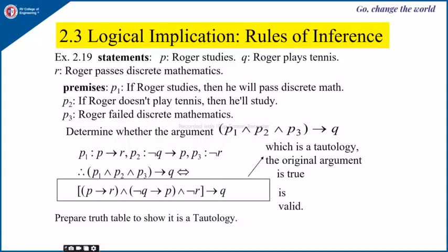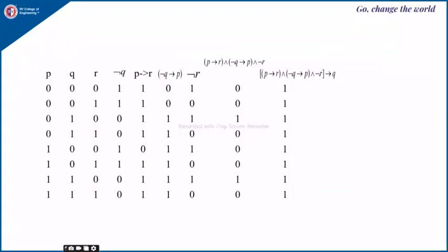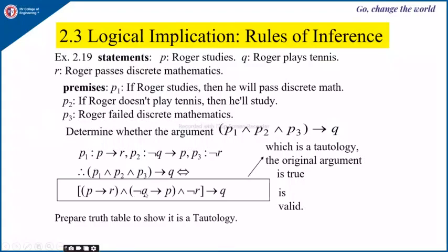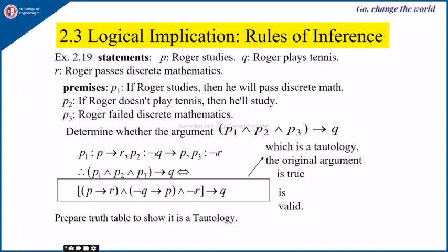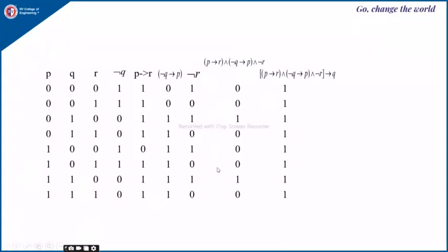You can use a truth table to show this is a tautology. Because we have three variables P, Q, and R, the table has 2³ = 8 rows. We list all combinations of P, Q, R values from 0,0,0 to 1,1,1, then evaluate P implies R, negation of Q implies P, and negation of R implies Q. Observing all cases, the result is always 1, confirming it is a tautology.